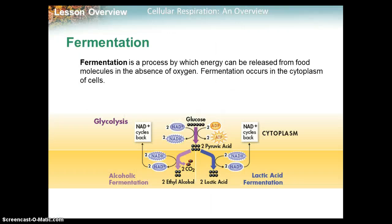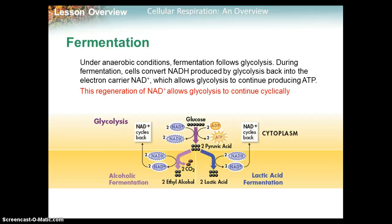Fermentation is a process by which energy can be released from food molecules in the absence of oxygen. When you do cellular respiration, you need oxygen; fermentation is what happens when you don't have enough oxygen. Fermentation occurs in the cytoplasm of cells. Under anaerobic conditions, fermentation follows glycolysis. During fermentation, cells convert NADH produced by glycolysis back to the electron carrier NAD+, which allows glycolysis to continue producing ATP.